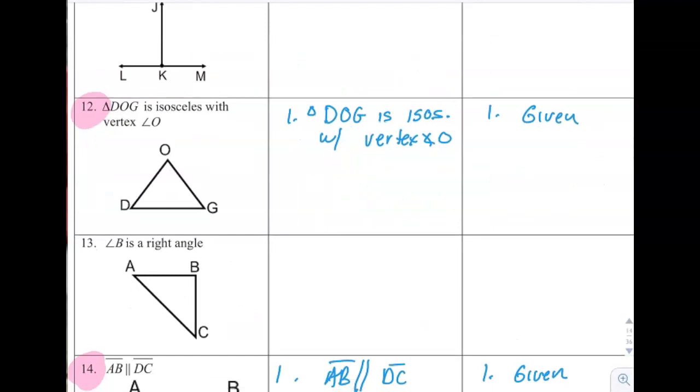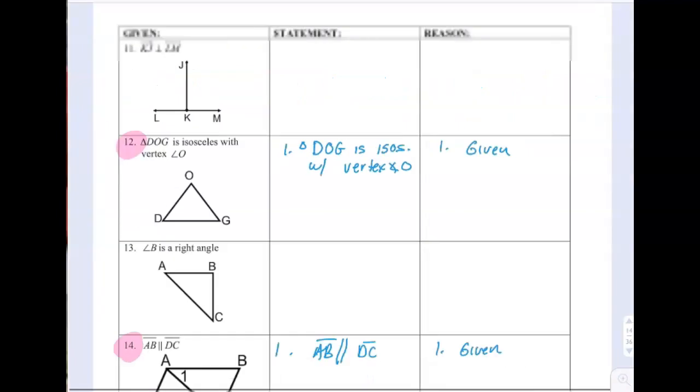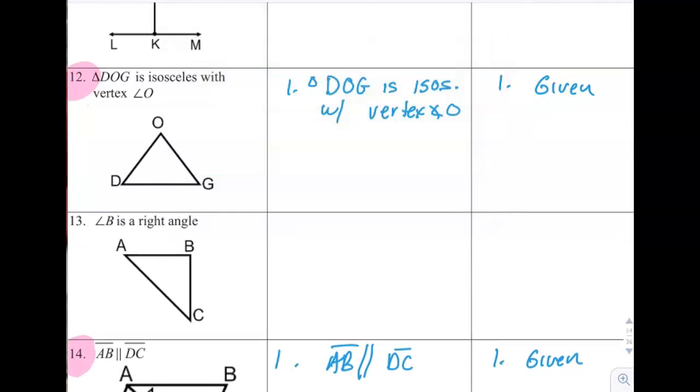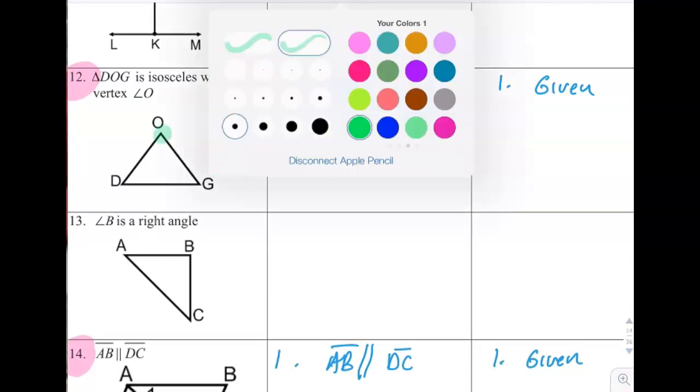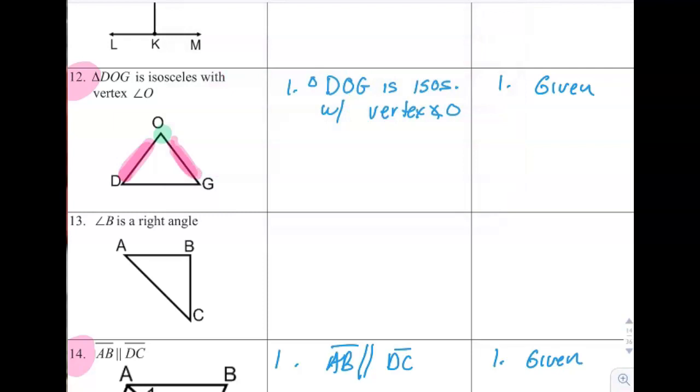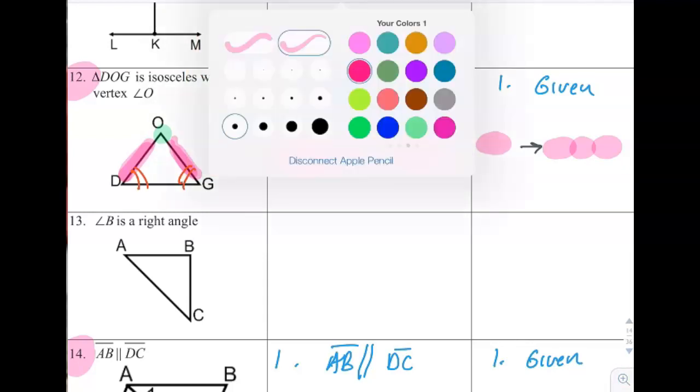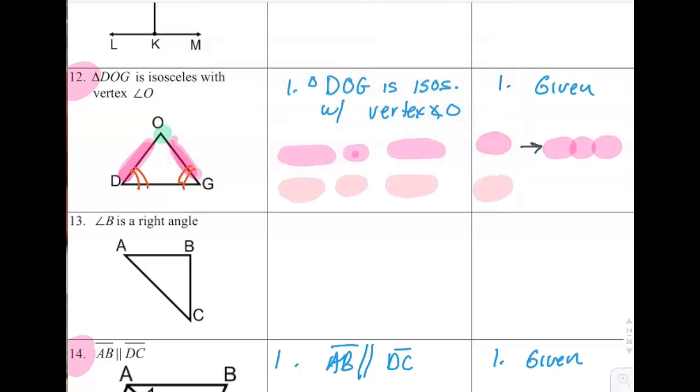Next page, number 12. Triangle DOG is isosceles with vertex O, so I essentially wrote the same thing as my given. There's a couple of things you could write here. You could say if it's isosceles with a vertex angle up at O, you could say that this side is the same as this side. So you could say DO is congruent to GO because isosceles implies two congruent sides. You could also say angle D and angle G. Angle D is congruent to angle G because isosceles implies two congruent base angles. So you're just defining the word from the step above.